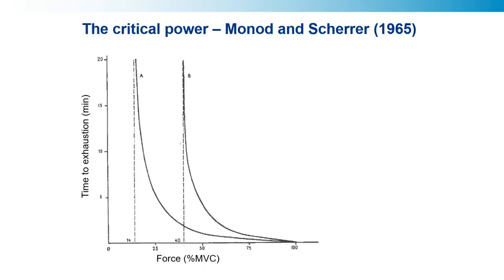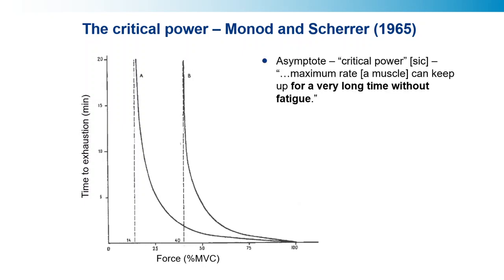This all goes back to the original work of Mono and Scherer in 1965. Last week I showed you this figure showing the force-time curves they generated for both static and intermittent exercise. You can see static exercise in A and intermittent exercise in B. What they argued was the asymptote, or what they called erroneously the critical power, was the maximum rate that a muscle can keep up for a very long time without fatigue.